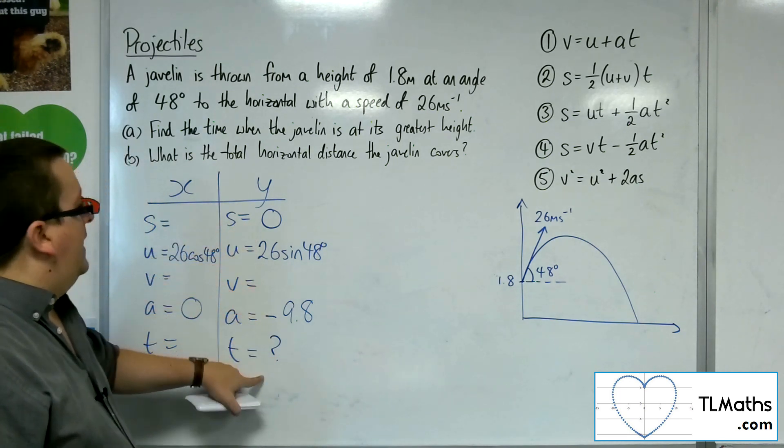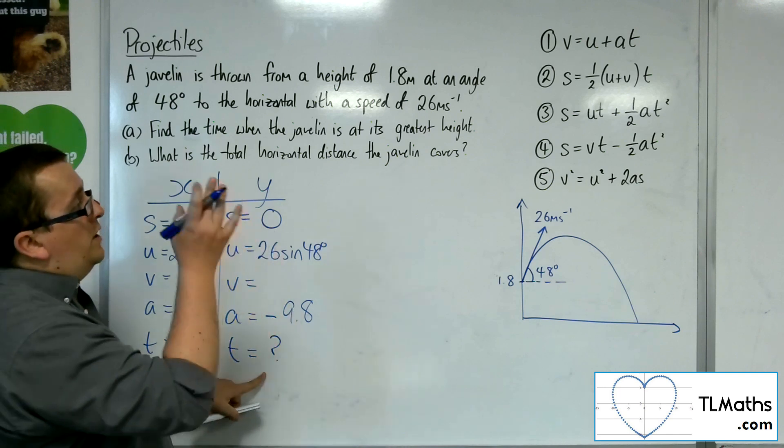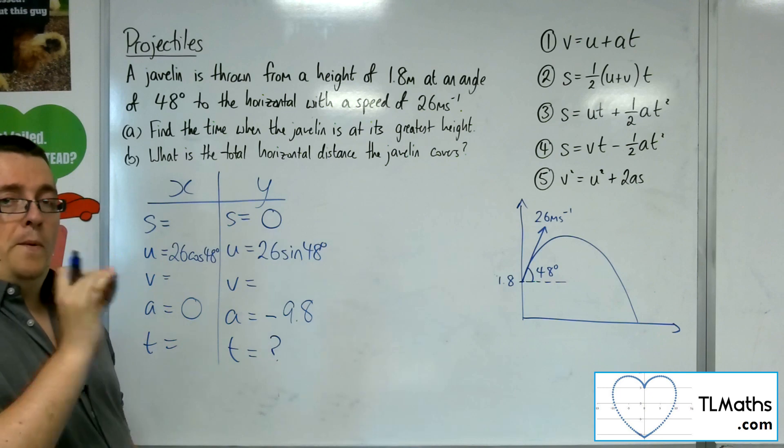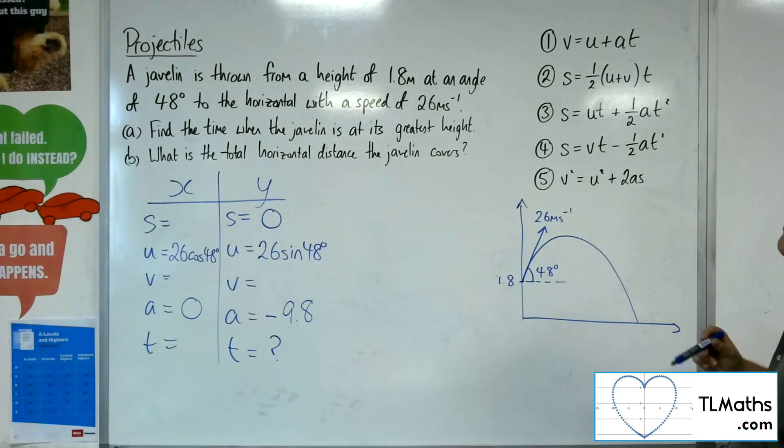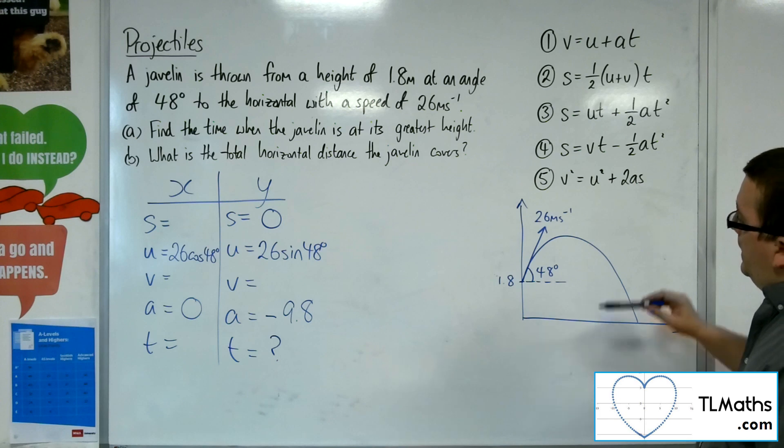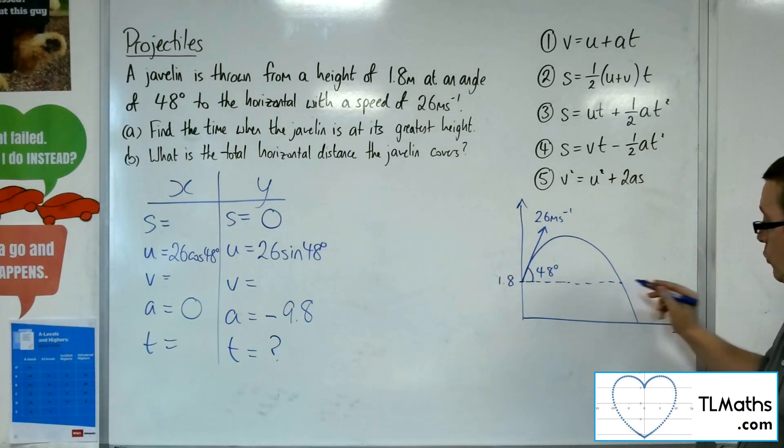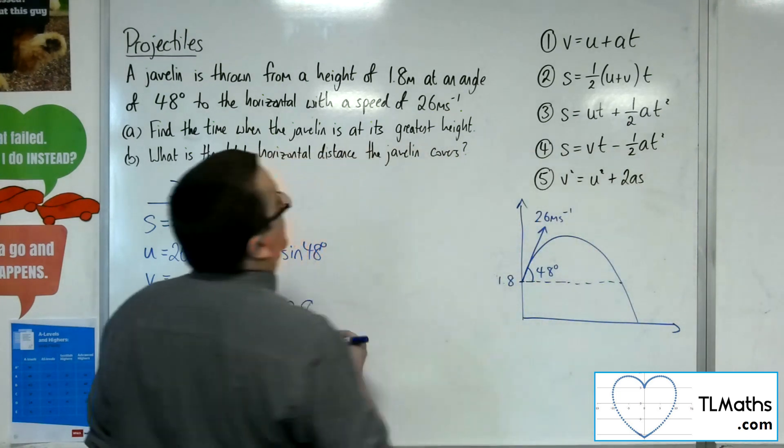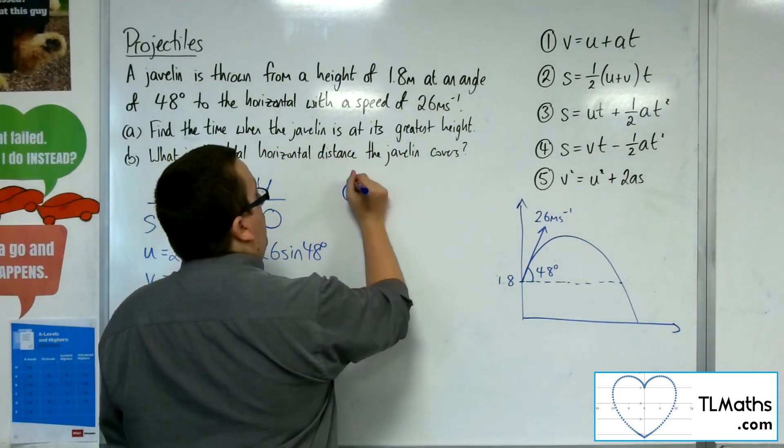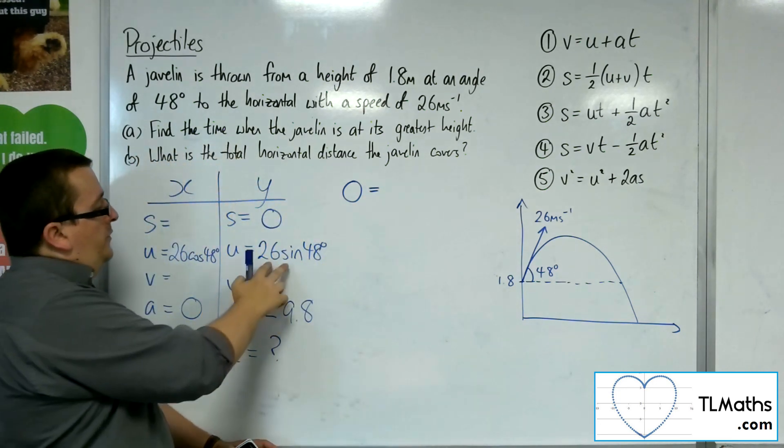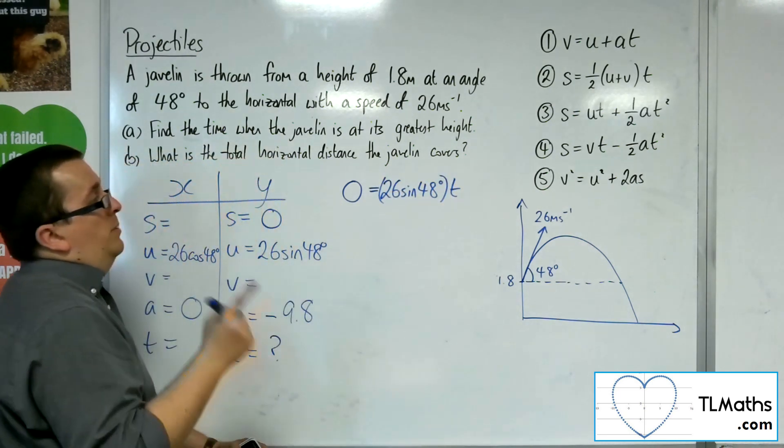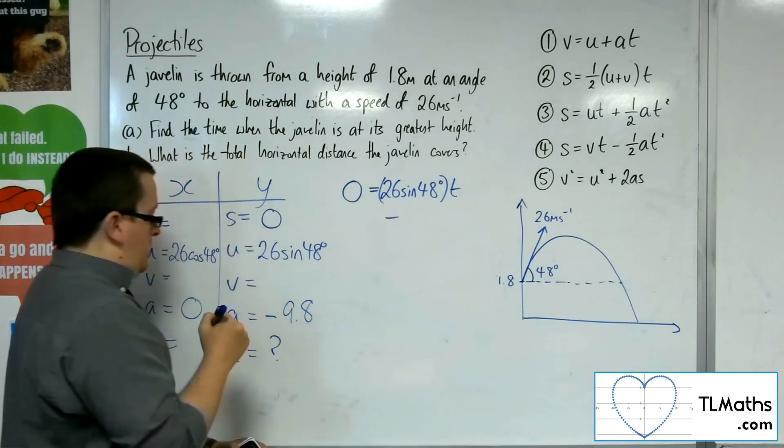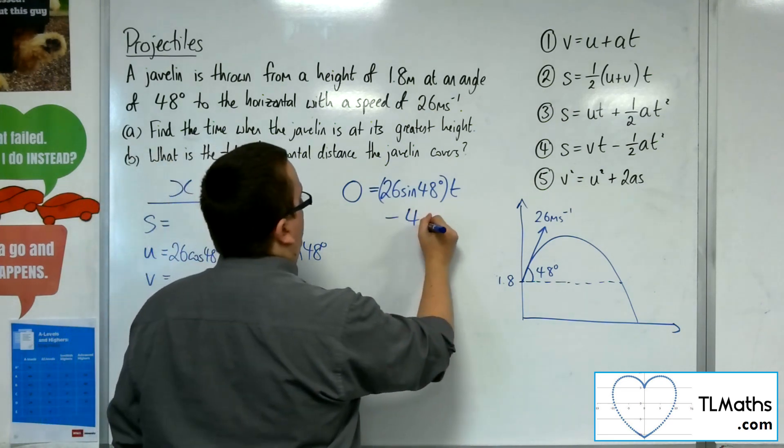Now, the S, U, and A with time, so S, U, A, and T would be equation number three. Now, this is where we're going to have to be a little bit more careful, because if I just have S as zero here, then what's going to happen is that I'm actually going to find this time here, because of the time at which I hit this point all the way along, and not this point here. I need to take that 1.8 into account. So, the S is zero, we've got U times T, so 26 sine 48 times T, plus a half AT squared, so minus 4.9 T squared.